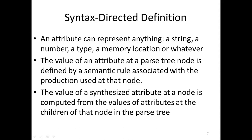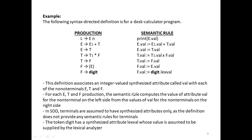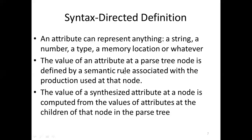The value of an attribute at a parse tree node is defined by a semantic rule associated with the production used at that node. The attribute value is defined in a rule — for example, e.val is an attribute, and val is an attribute of e. When we get the value of e1.val and e2.val, we get the value of e.val. So we define the value of attributes in parse tree nodes.